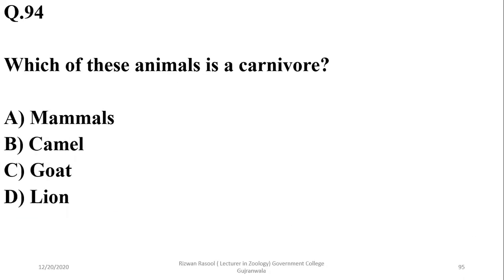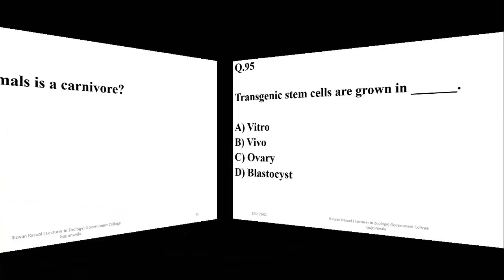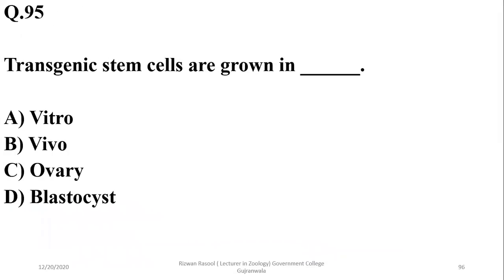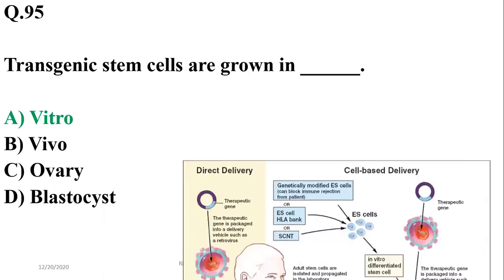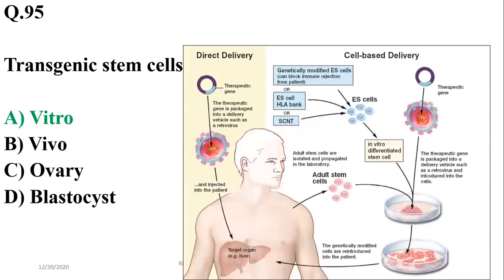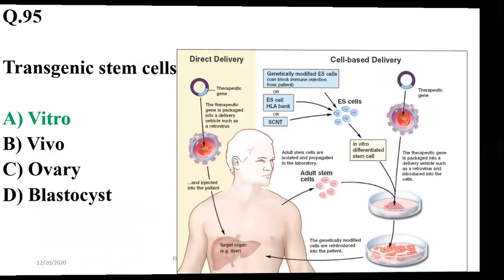Question 93: This animal is a carnivore — general knowledge applied to biology. Question 94: Transgenic stem cells are generally grown in vitro before they are transferred into the body — so A.